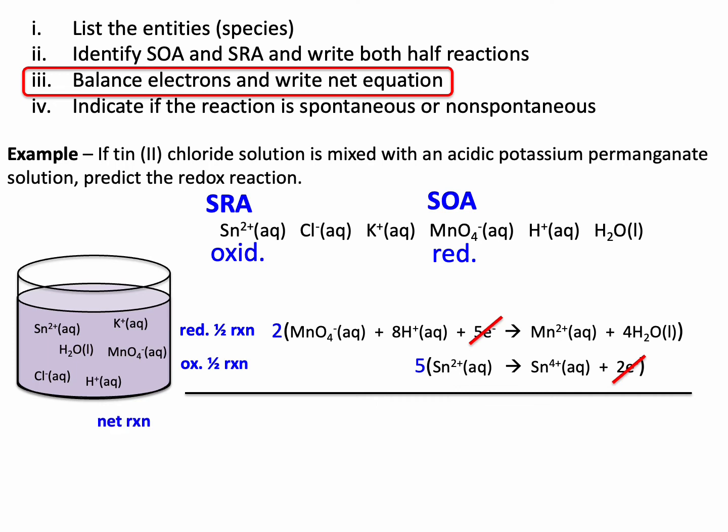Now I just do the math. I cancel my electrons, and my net reaction is 2MnO₄⁻ + 2 times 8, 16H⁺, plus 5Sn²⁺ produces 2Mn²⁺, 2 times 4 is 8 waters, and 5Sn⁴⁺. And that is my net reaction.